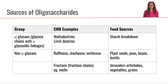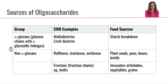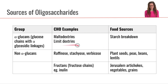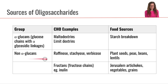Let's take a look at sources of oligosaccharides — remember oligosaccharides are composed of between three to ten monosaccharides bound together. The alpha glucans are oligosaccharides that are glucose chains with alpha glycosidic bonds, referring to the orientation of that glycosidic bond. Examples of those would be maltodextrins and limit dextrins — compounds we get from starch breakdown. Sometimes these are used as additives, so if you look at ingredient labels you may see maltodextrin, which you can think of as a type of added sugar.